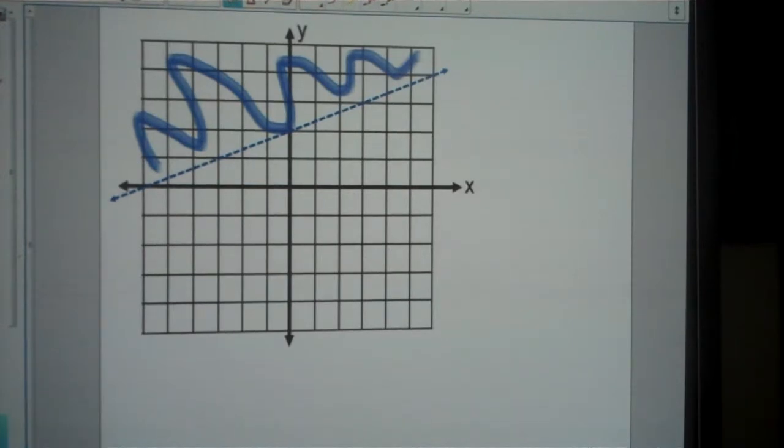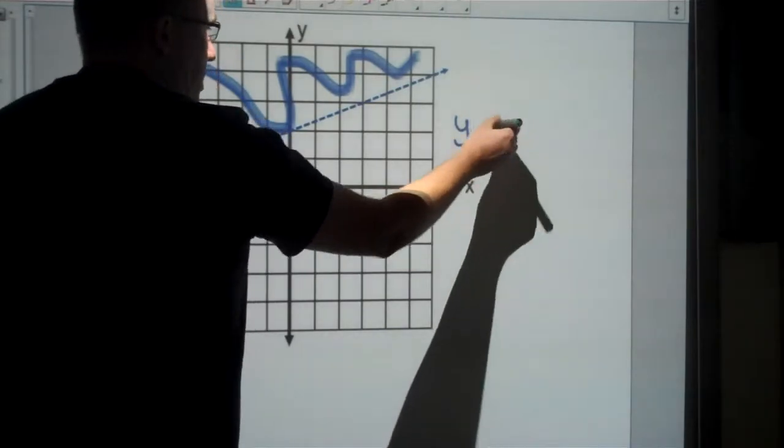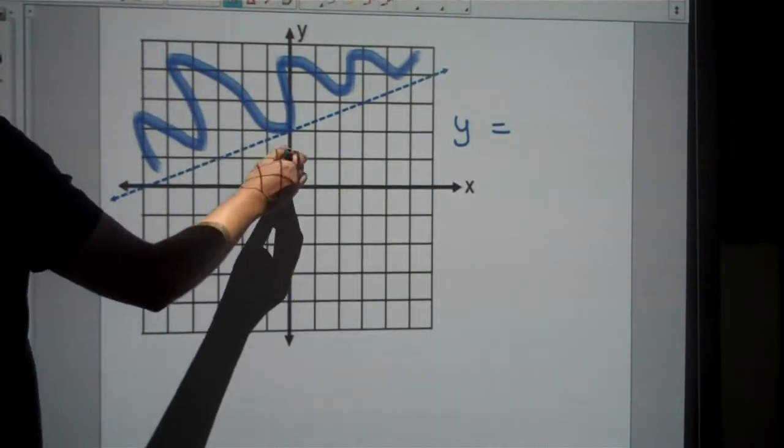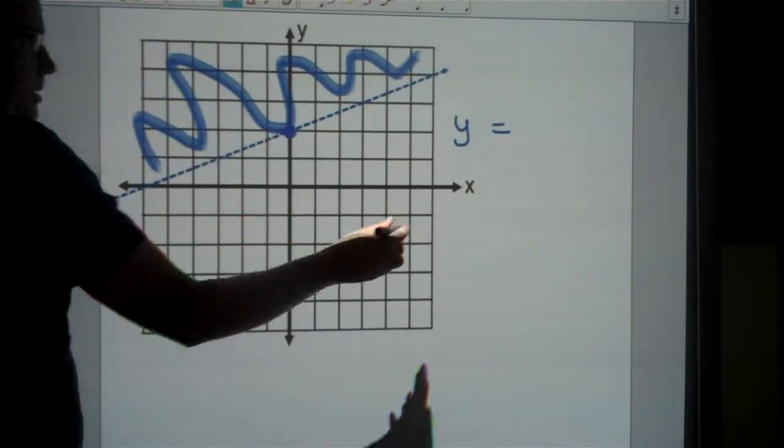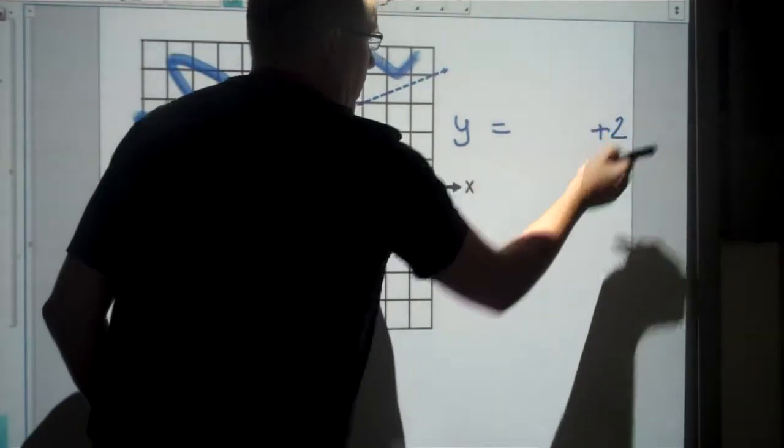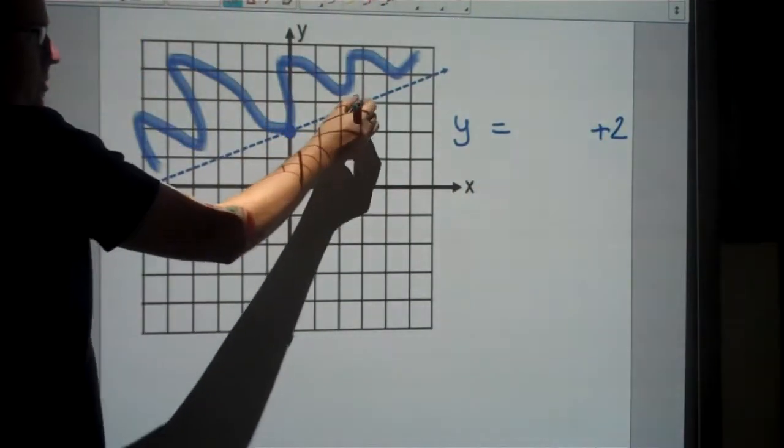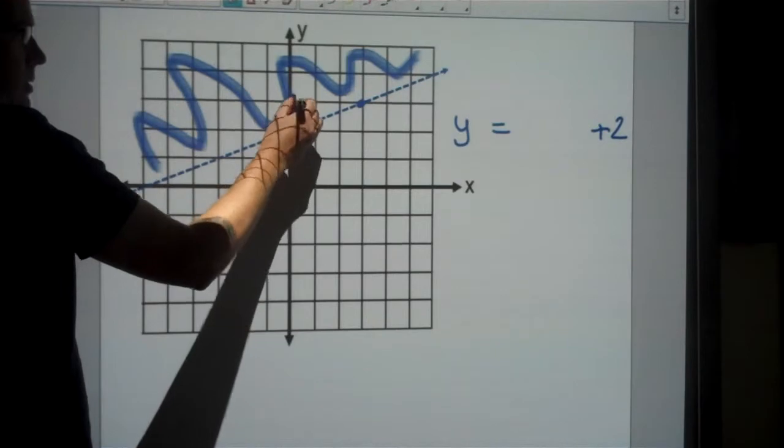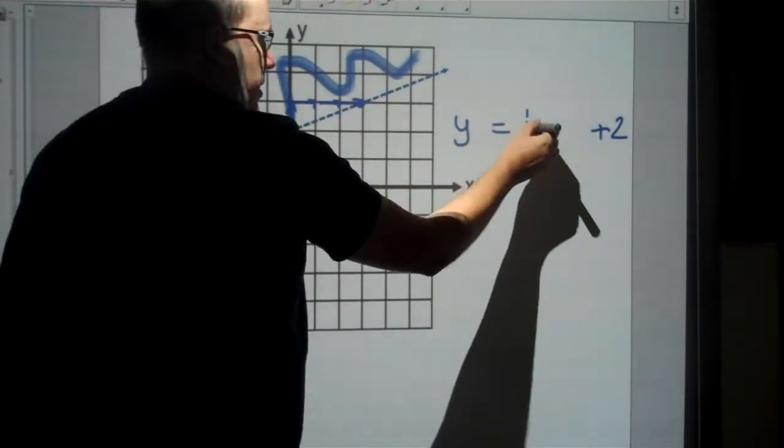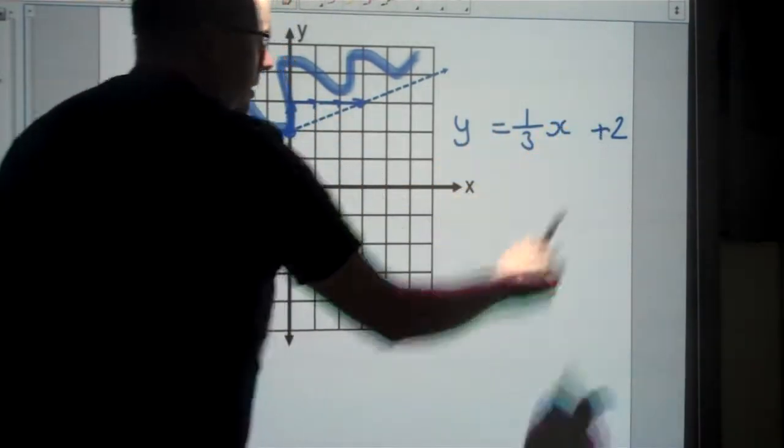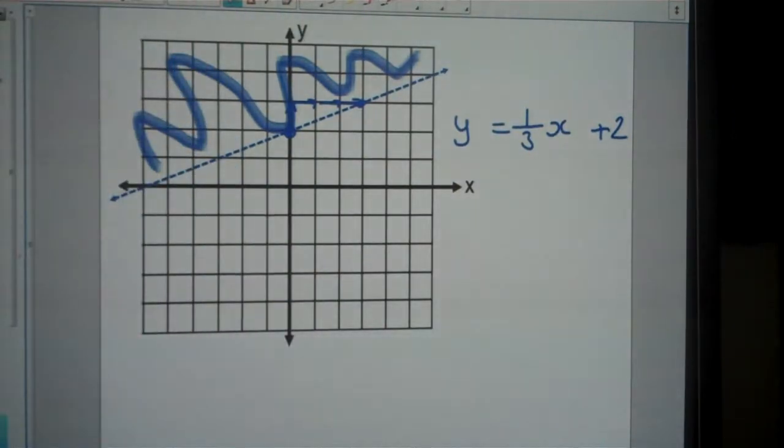For the second example, I've got more work to do. This one's in slope-intercept form, so I'll start with y equals. It goes through 2 on the y-axis, so plus 2. I can see the slope from these two points here. It goes up 1 and across 3, so the slope is 1 over 3. So y equals 1/3x plus 2.